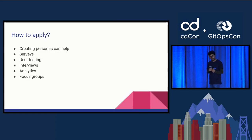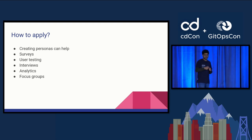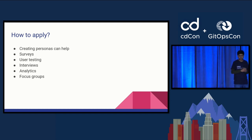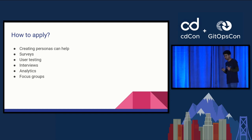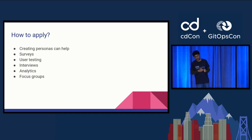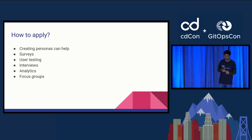How to apply empathy with users: creating personas can help. Personas are fictional characters created based on research to represent the different user types that might use your product or service. Surveys are also a popular method for getting user feedback — but it's also about how you send out that survey.